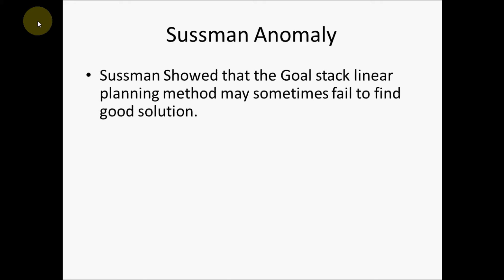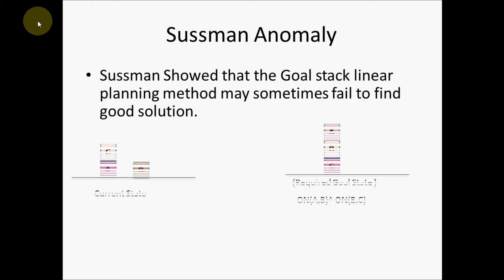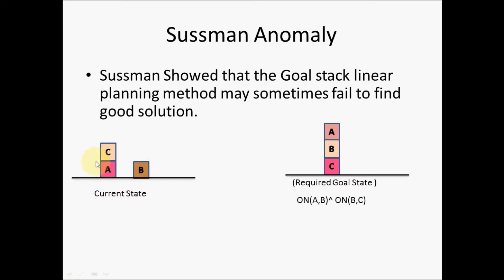To illustrate this, consider this example of the block world. Let this be the current state where block C resides on top of block A, and block B is on the table. The required goal is that block A should reside on block B, and block B in turn should reside on block C. When we try to solve this using goal stack planning, the very first step is to load the goal onto the stack.